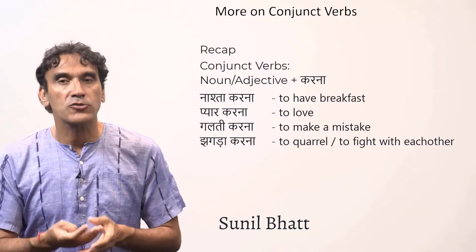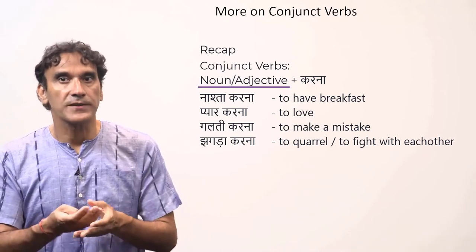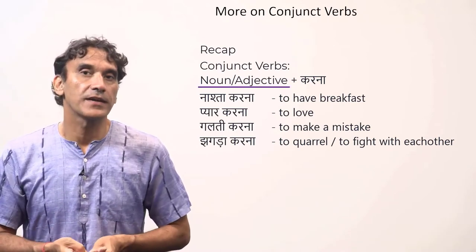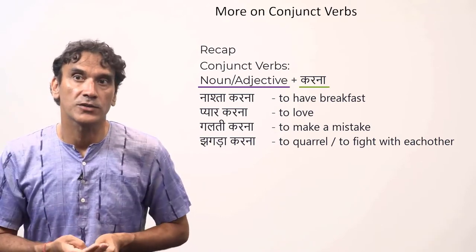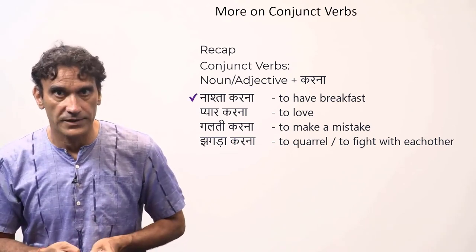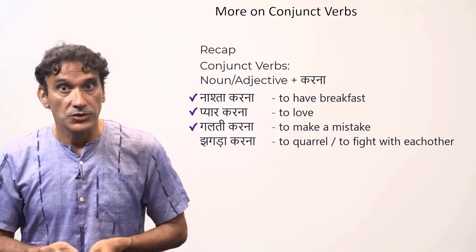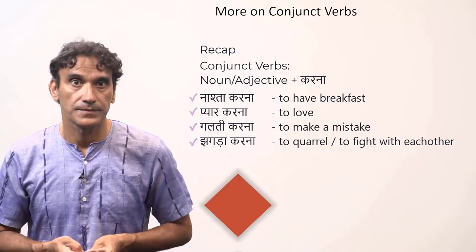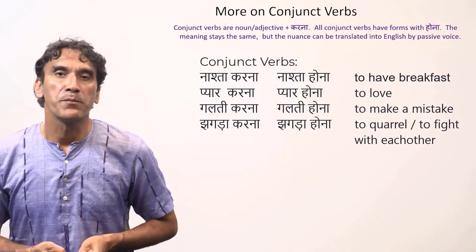In an earlier grammar point we learned the conjunct verbs. Let's quickly recap: conjunct verbs have two components — the first can be a noun or an adjective, and the second is a verb. The most common second component is the verb 'karna'. For example: 'nashta karna' (to have breakfast), 'pyaar karna' (to love), 'galti karna' (to make a mistake), 'jhagda karna' (to quarrel/fight).